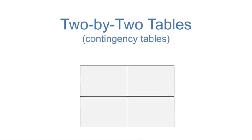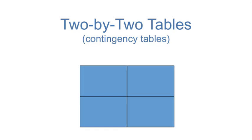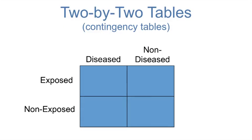Now let's talk about 2x2 tables, which are commonly used to teach the concepts of measures of association. The 2 refers to two columns and two rows; these tables are also known as contingency tables. The 2x2 table shows exposures as two categories — exposed and non-exposed — and the disease or health outcome in two categories, usually diseased and non-diseased. For this MOOC, our convention will be disease on the top and exposure on the left-hand side. Each sub-square is labeled with a letter A, B, C, and D.